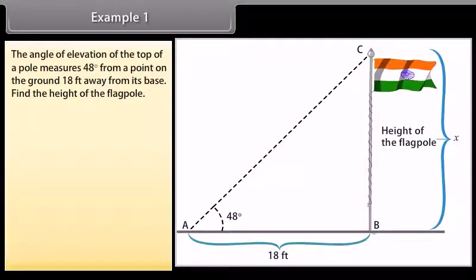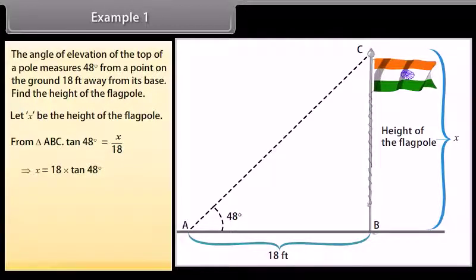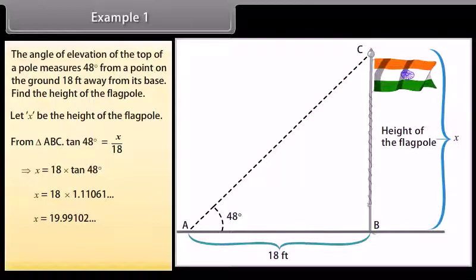The angle of elevation of the top of a pole measures 48 degrees from a point on the ground 18 feet away from its base. Find the height of the flagpole. Let X be the height of the flagpole. From triangle ABC, tan 48° = X / 18, which implies X = 18 × tan 48° = 18 × 1.11061 = 19.991, which equals approximately 20. So the flagpole is about 20 feet high.